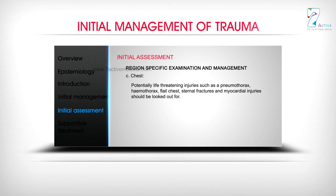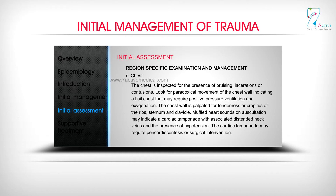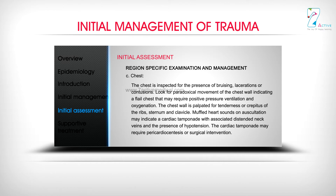For chest examination, potentially life-threatening injuries such as pneumothorax, hemothorax, flail chest, sternal fractures, and myocardial injuries should be looked out for. Inspect the chest for bruising, lacerations, or contusions. Look for paradoxical movement of the chest wall indicating a flail chest, which may require positive pressure ventilation or oxygenation. Palpate the chest wall for tenderness or crepitus of the ribs, sternum, and clavicle. Muffled heart sounds on auscultation may indicate cardiac tamponade with associated distended neck veins and hypotension, which may require pericardiocentesis or surgical intervention.